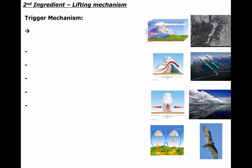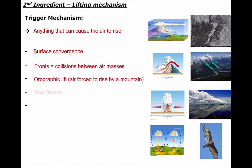If we start to understand what it takes to build a thunderstorm, let's get through the other three ingredients. The unstable atmosphere takes quite a bit of time to explain, but the other ones go pretty quickly. We need something to cause air to rise — we need a trigger. A trigger is anything that can cause the air to rise: air can converge at the surface, rise along a front, get lifted over a mountain, rise from a sea breeze, or rise simply because it gets hot.